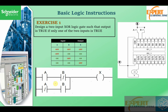This is the ladder logic for that program. If you are to hardwire it, this is going to be the circuit. You have two contacts A and B, which have been wired to input zero and input one, and the output is wired at output zero. This is the XOR equation.